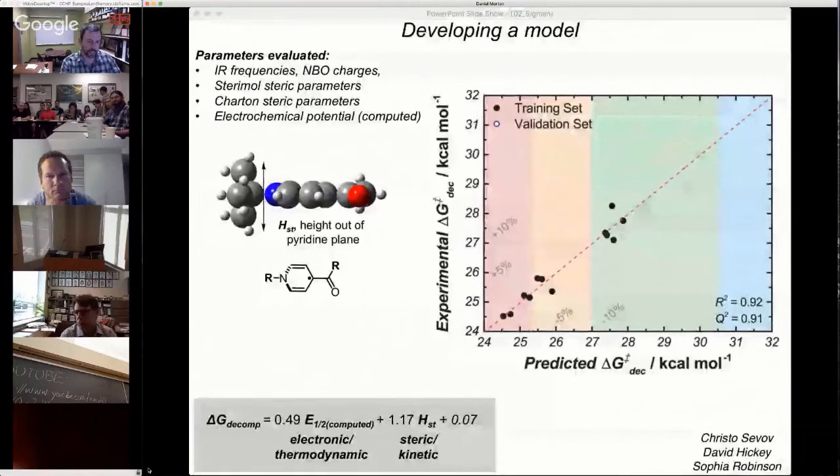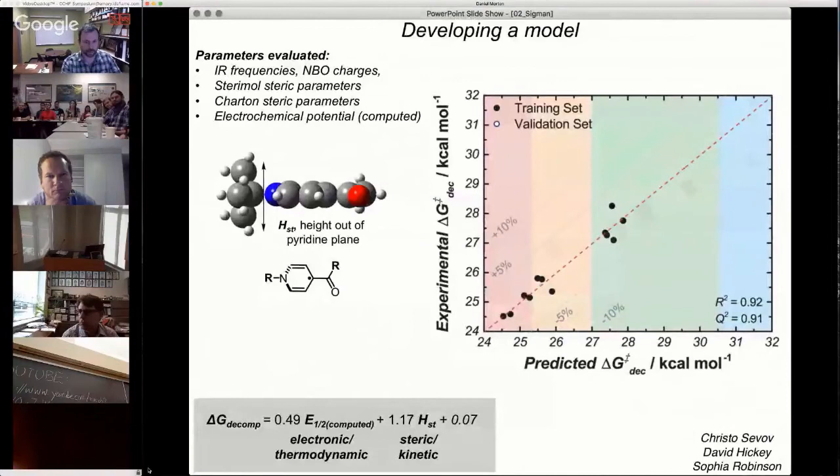You get great statistics. What's important to note is E1/2 is a thermodynamic property. It's fundamental, and you can even consider it an electronic property in a kind of primitive way. HST, or the height out of plane, is a steric property, obviously. It's a size thing. But I think what we're seeing here is a kinetic involvement in slowing down the decomp path, which we think is a dimerization. What's exciting about this equation is you kind of separate it from electronics and sterics. That means you presumably can try to optimize these either independently or concurrently to get a molecule that you care about.